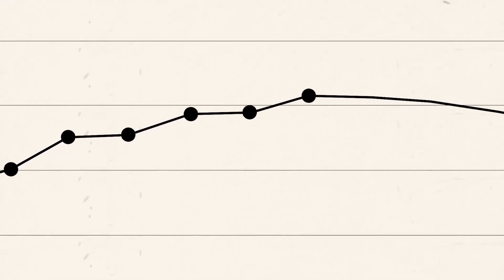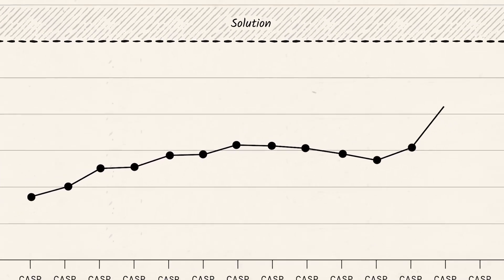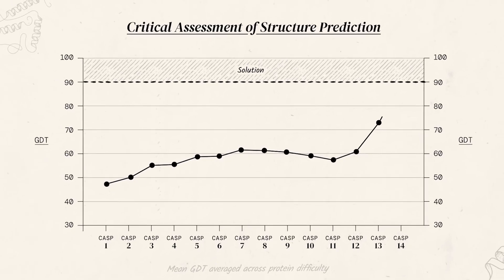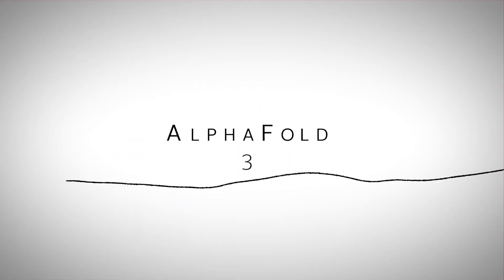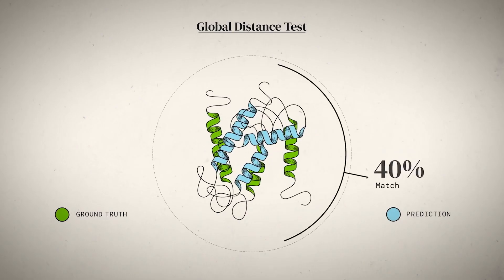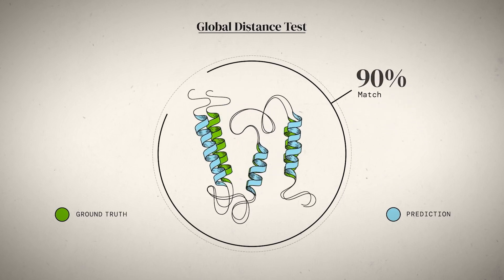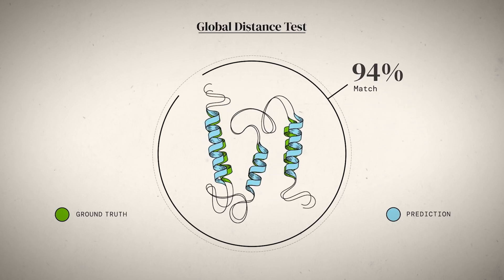Further, AlphaFold2 was released in 2020, which significantly improved the accuracy of these predictions. But AlphaFold3 is a real game-changer. It can predict the structures of almost all biological molecules and model how they interact with each other.